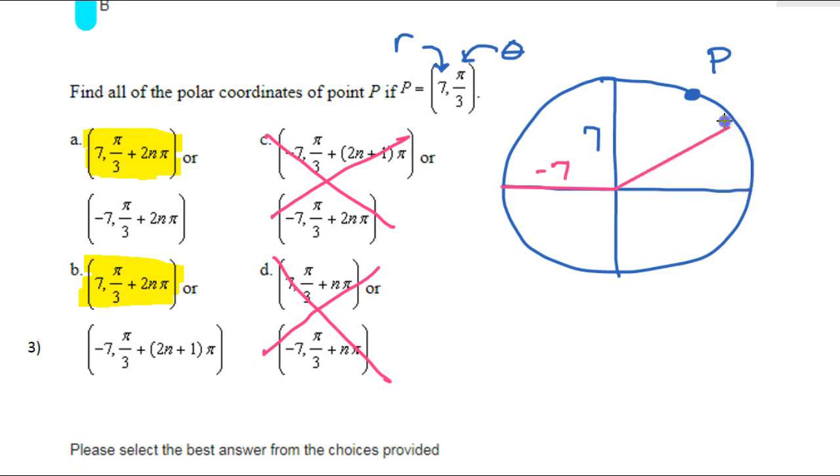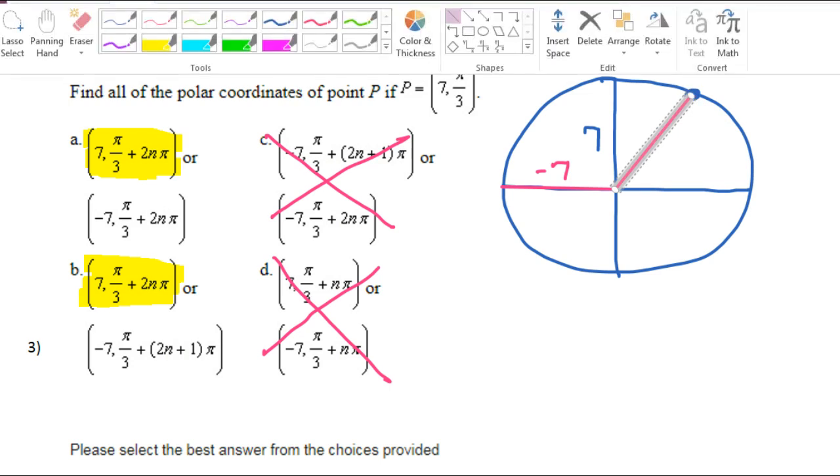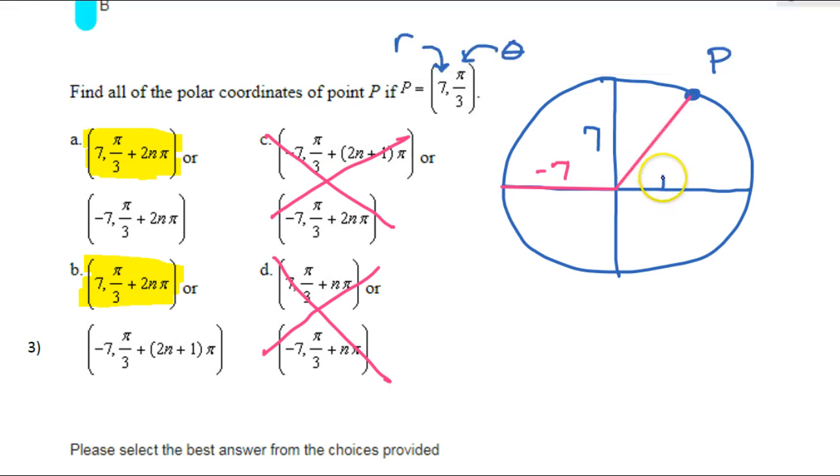Now, if I go here, that's pi plus pi over 3. Remember, this angle right here, we knew from the start, this angle right here is pi over 3.